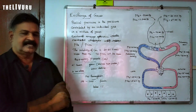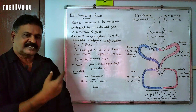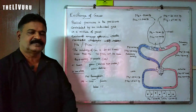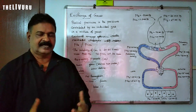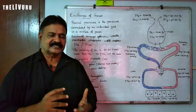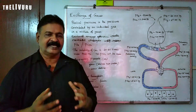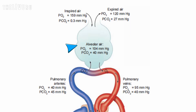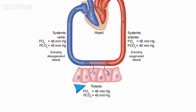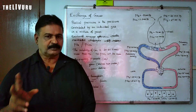In respiration, partial pressure is important. Carbon dioxide and oxygen exchange takes place in two places: in the lungs and in the tissues.